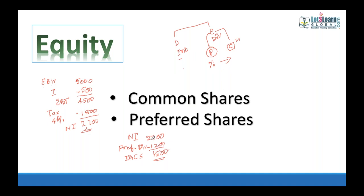If EBIT drops to say $3.5 million, after interest, taxes, and the fixed preference dividend of $1.2 million, common shareholders may get only $350,000 or $250,000. IACS divided by the number of common shares — say 1 million shares — with $1.5 million IACS gives an EPS of $1.50, meaning profit per common share is $1.50.